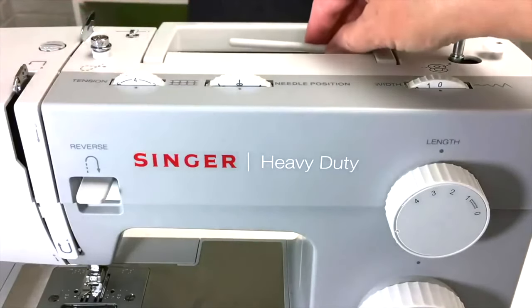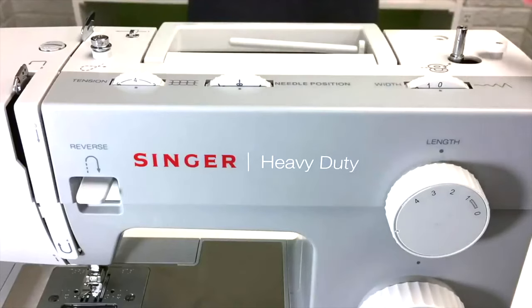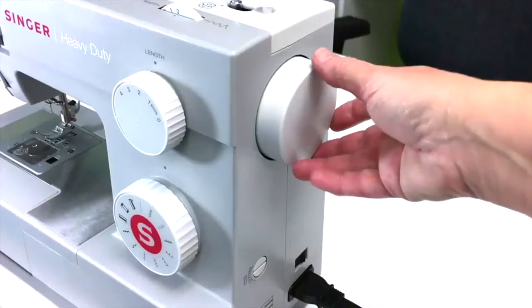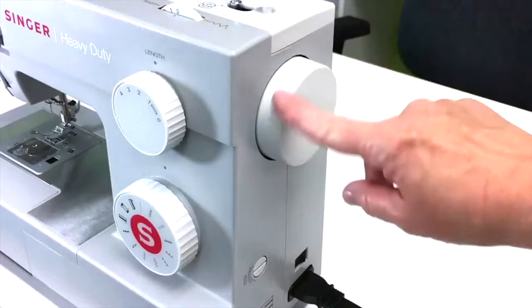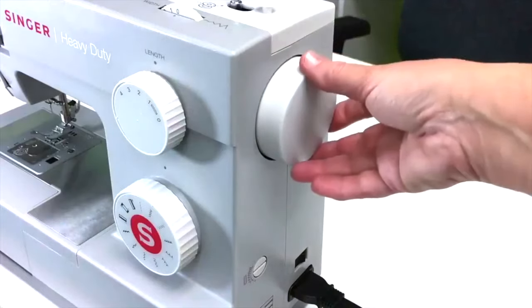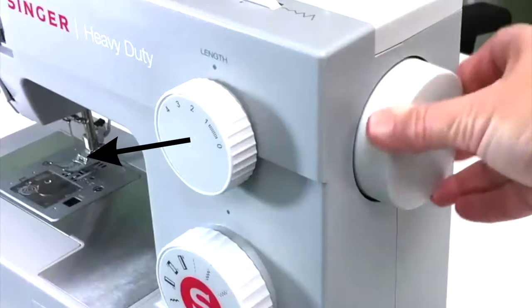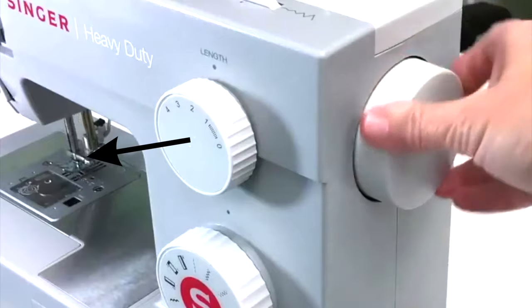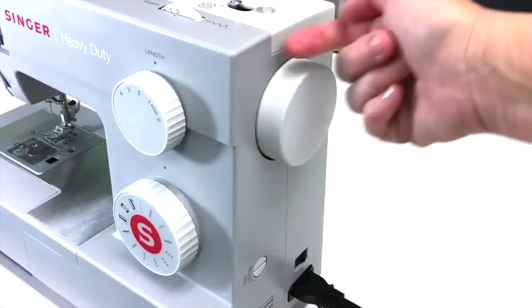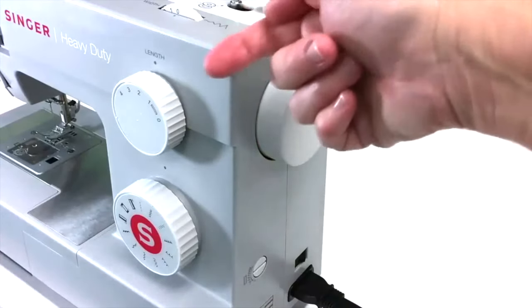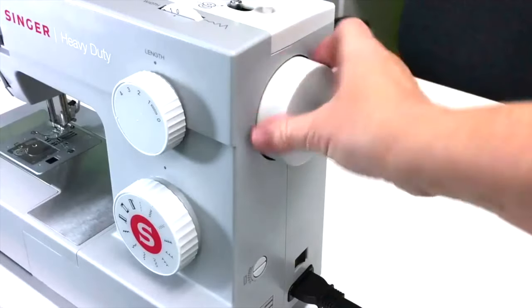This is the spool holder to hold your thread and this is the bobbin winder. On almost every machine on the side you'll have what's called a flywheel, and this will raise and lower the needle of your machine. You always want to turn it towards the front, towards yourself.